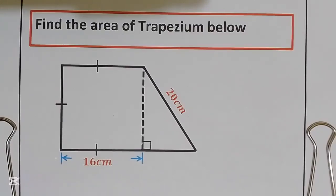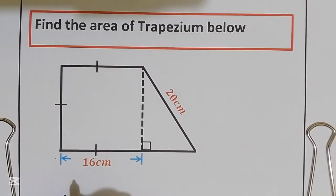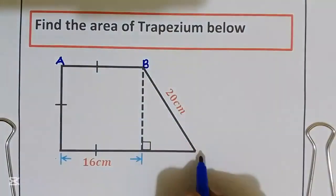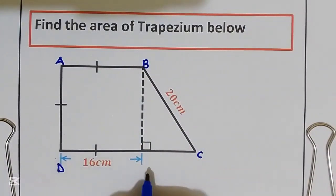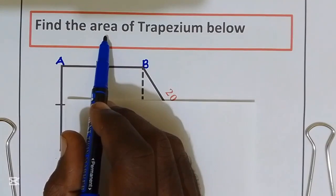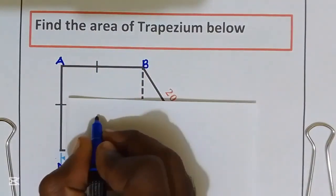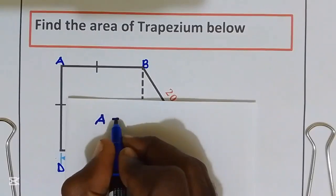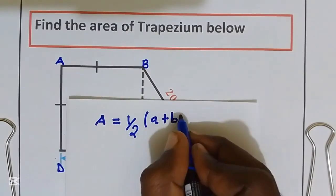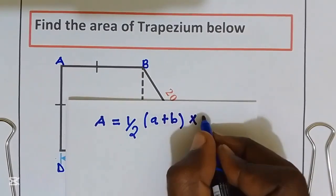Hello, welcome back to the channel. We have a trapezium question — we need to find the area. Let us first give a name to our trapezium; we are going to call it trapezium ABCD. The formula to find the area of a trapezium is: area = one half times (side A plus side B) multiplied by the height.